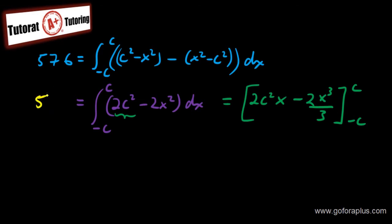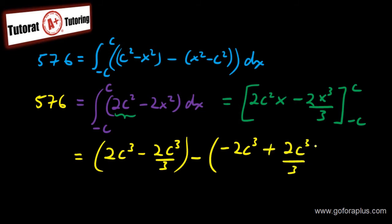Remember, this is equal to 576. So when I plug in the value here, I have 2c cubed minus 2c cubed over 3. Subtract. Minus c plug in here will give you minus 2c cubed. Minus c plug in here will give you minus c cubed. But minus minus is a plus. So a plus 2c cubed over 3.